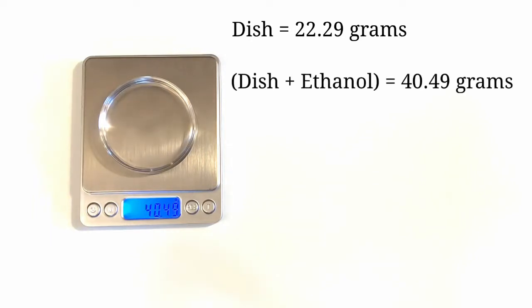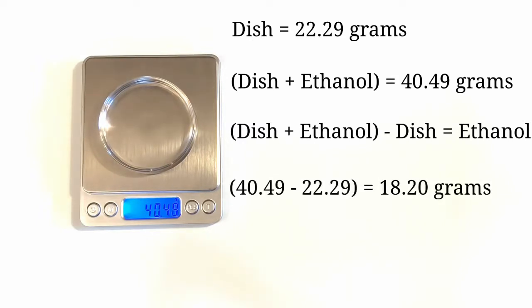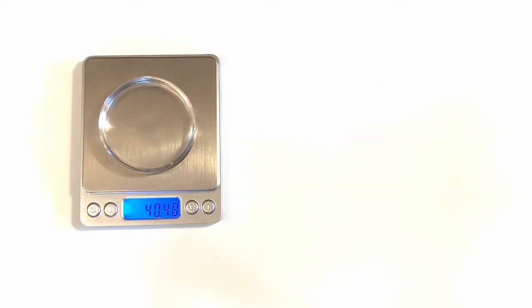Let's do a little math. The mass of the dish by itself is 22.29 grams. After we added the ethanol, the total was 40.49 grams. So if we take that total and subtract the mass of the dish, what we have left is the mass of the ethanol, and that comes up to 18.20 grams.